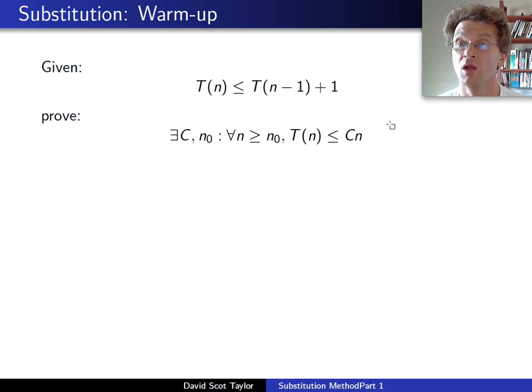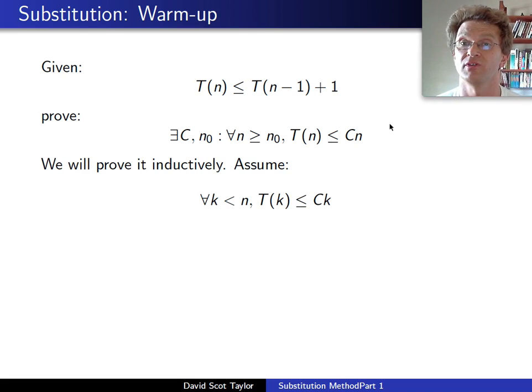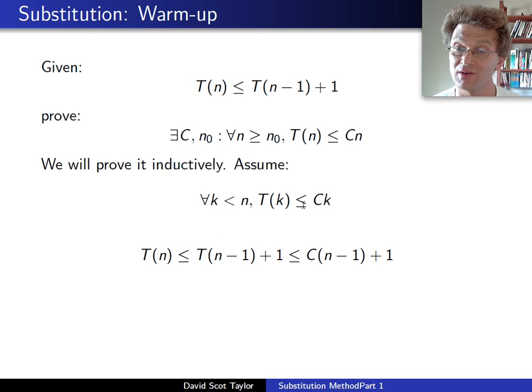We're going to take the same approach for substitution every time. We're going to assume that we're given the guess. We're trying to prove big O of n. We're going to prove this inductively. I'm going to assume T(k) ≤ Ck for any k value smaller than n. Then I'm going to plug in that inductive assumption. T(n-1), since n-1 is less than n, I can use n-1 as a k value. So T(n-1) ≤ C(n-1), and I plug that in here.